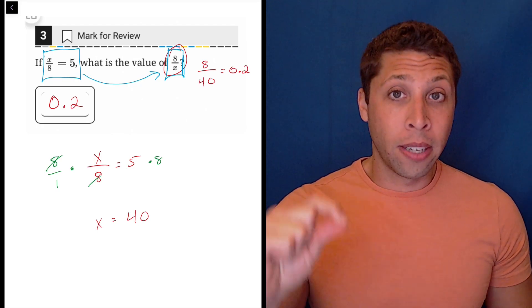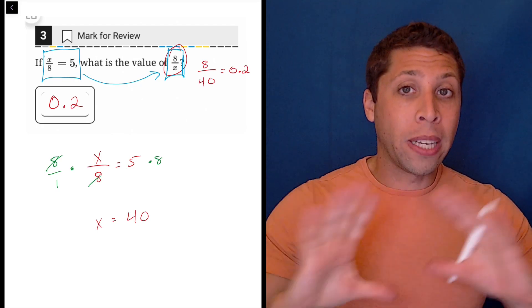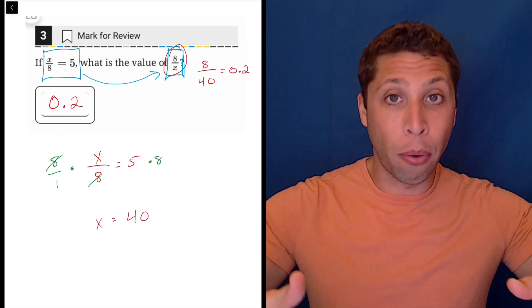So we're allowed to do this move because this is a very uncomplicated kind of equation that they've set up. We can just flip both things over.